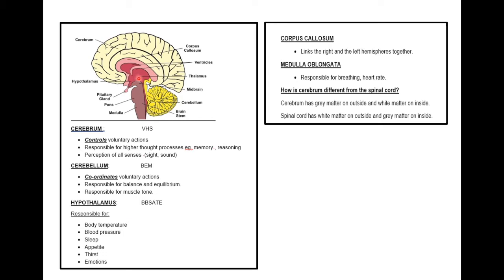In a maroon color, that's the hypothalamus. I teach its functions as BBSATE: responsible for body temperature, blood pressure, sleep, appetite, thirst, and emotions. The corpus callosum, in a lighter pinkish color, links the two hemispheres of the brain together. At the bottom is the medulla oblongata, which is responsible for breathing and heart rate.